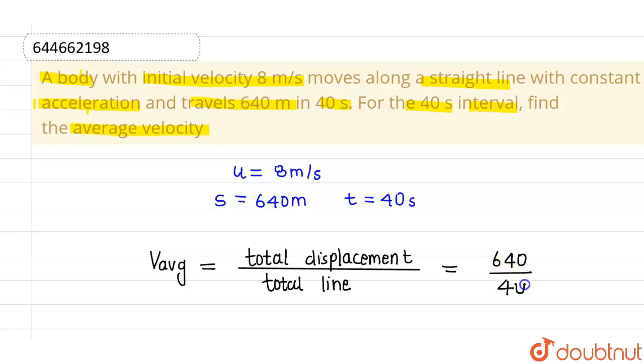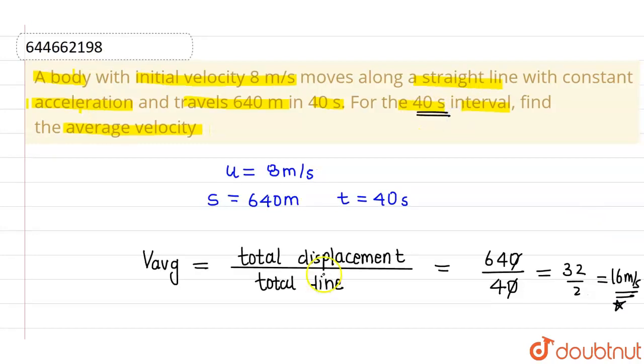So this will be divided by 40, and this comes out to be 32 by 2, which means 16 meter per second is the average velocity for the 40 second interval time.